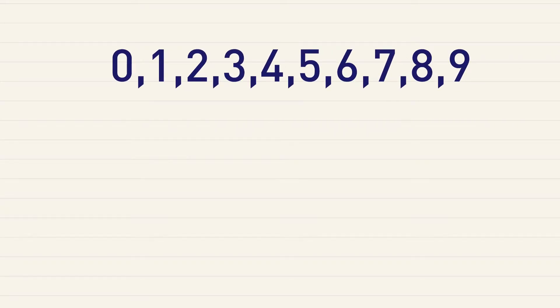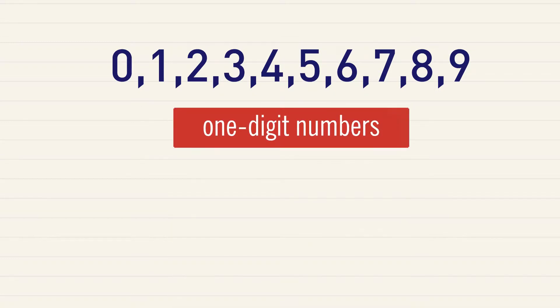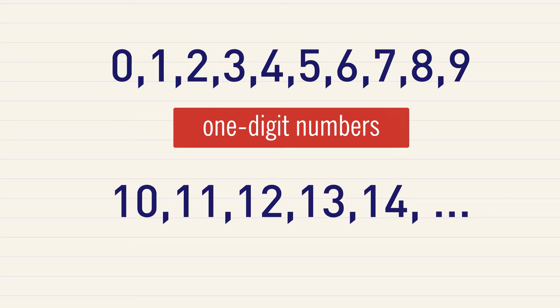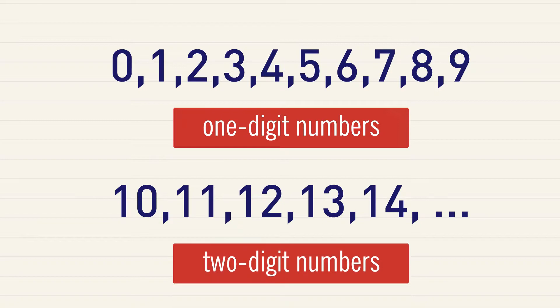We know that 0, 1, 2, 3, 4, 5, 6, 7, 8, and 9 are one-digit numbers. 10, 11, 12, 13, 14, and so on are two-digit numbers.